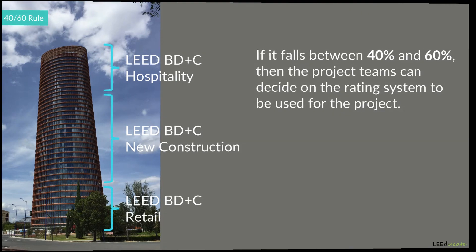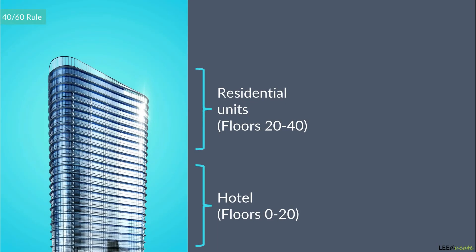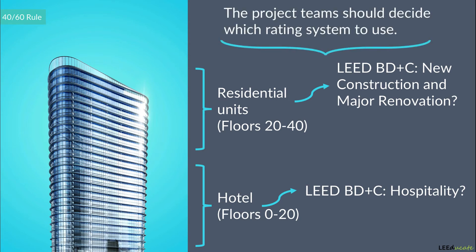Let's consider the 40-story high-rise building project example from the previous topic, which contains a hotel in the first 20 floors and residential units on the floors above 20. Since 50% of the project's total area is appropriate for one rating system and the other 50% for the other, the project teams will decide which rating system to use.